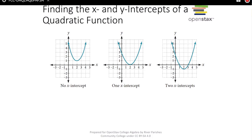Hi, this is part 4 of 5.1 quadratic functions. We're going to talk about x and y-intercepts of quadratic functions now.